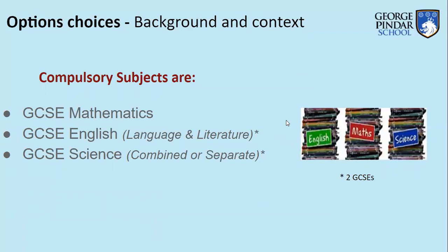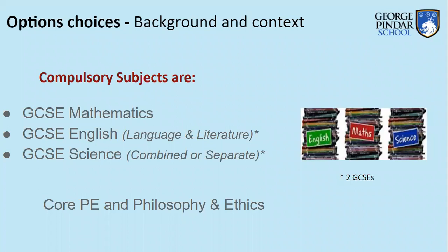Those core subjects are GCSE Maths, GCSE English — which includes English Language and English Literature — and GCSE Science, where you have the choice of including Separate Science in your options in addition to Combined Science. That gives you five GCSEs altogether before we even get to options. In addition, you will have core PE — two lessons per week — to ensure you remain healthy and active. There is no assessment in core PE; it's purely practical.